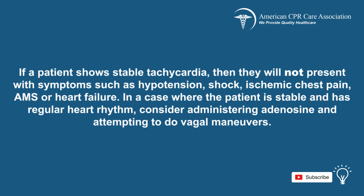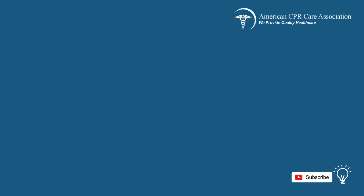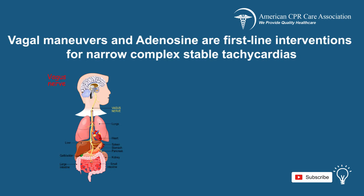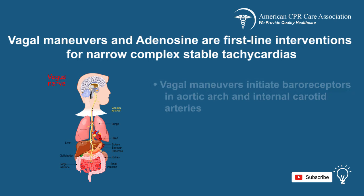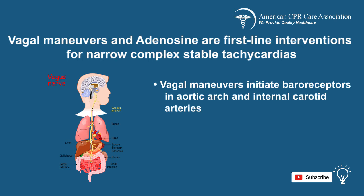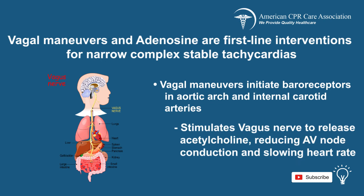In a case where the patient is stable and has regular heart rhythm, consider administering adenosine and attempting vagal maneuvers. Vagal maneuvers and administration of adenosine are the first-line interventions for narrow, complex, stable tachycardias. These maneuvers initiate baroreceptors in the aortic arch and the internal carotid arteries, which cause stimulation of the vagus nerve, which releases acetylcholine. The acetylcholine reduces AV node conduction and eventually slows down the heart rate.